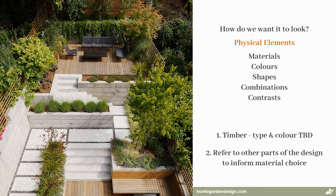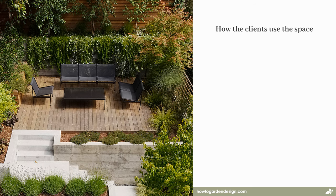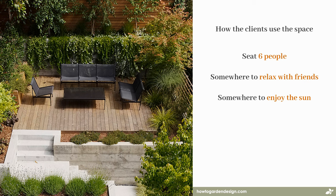You don't need to specify anything about the physical look of a space if you don't want to, or don't have examples you like just yet. But if you do, it's helpful to articulate what you like as much as possible. Try to focus on broader things like colour and shape, as it's easier to find multiple options that fit those criteria than it is to find a specific colour of timber or stone. The next thing to think about is how the clients want to use the space. Let's suggest the clients wanted a space capable of seating about six people — somewhere they could relax, have some drinks, chat, maybe some nibbles, and somewhere to enjoy some sun and read a book.